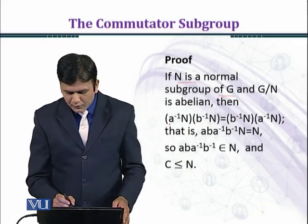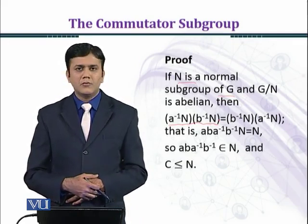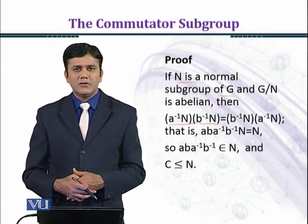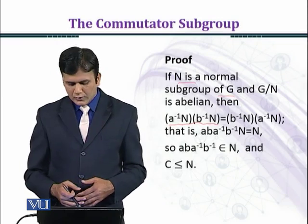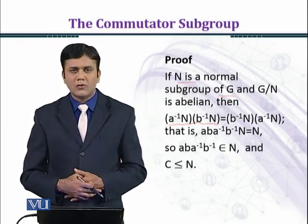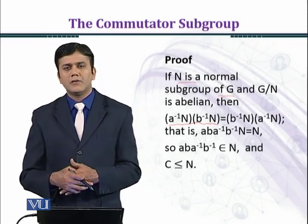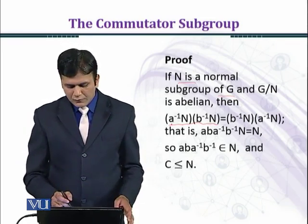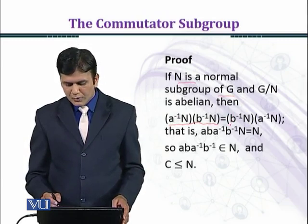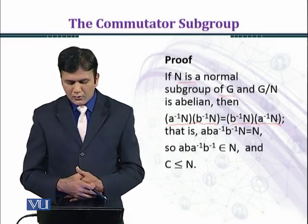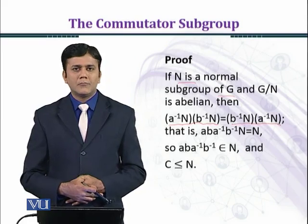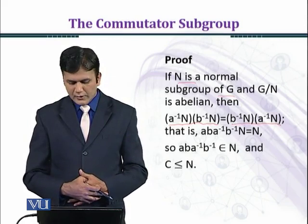We take the product a⁻¹N into b⁻¹N in the factor group. Since a and b belong to G, and G is a group, their inverses also belong to G. So we form two cosets: one from a⁻¹ and one from b⁻¹. In G over N, we have a⁻¹N · b⁻¹N equal to b⁻¹N · a⁻¹N, because we are assuming that G over N is abelian, so its elements commute.